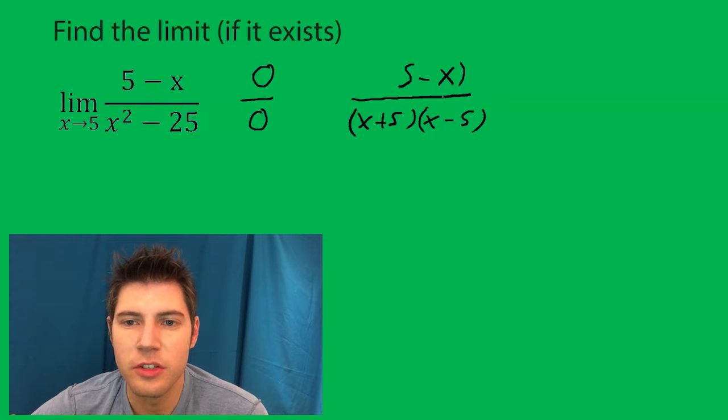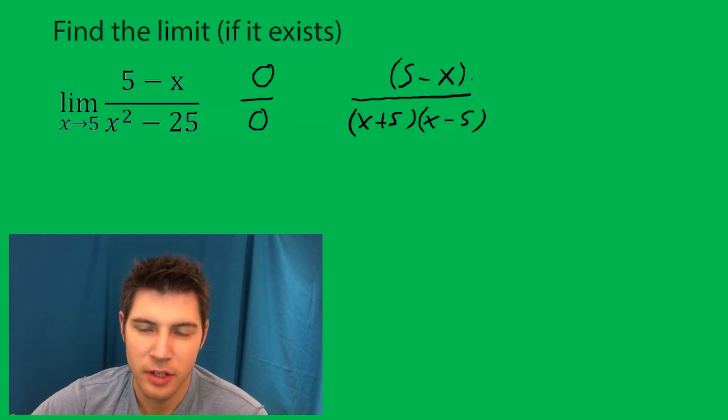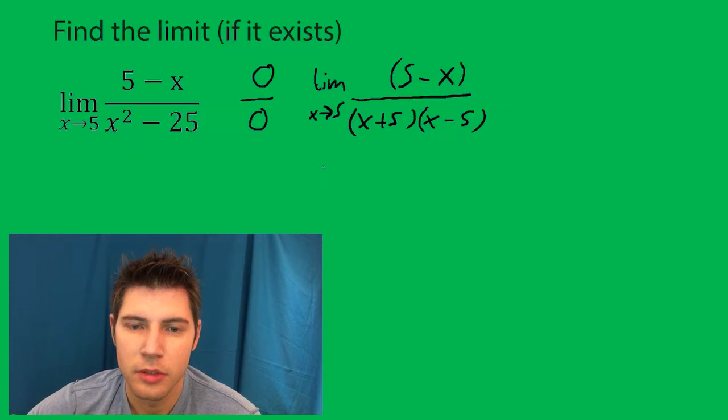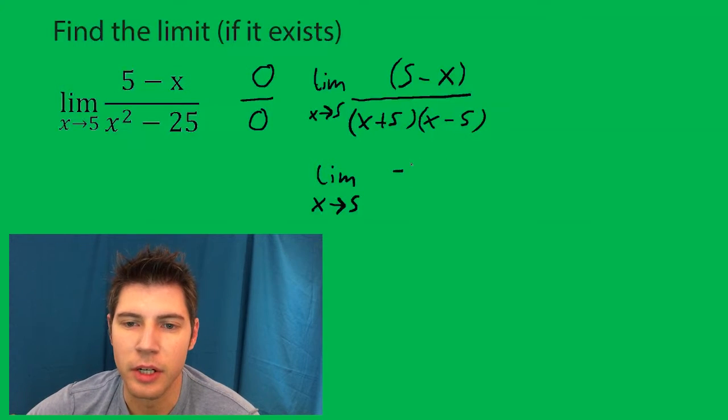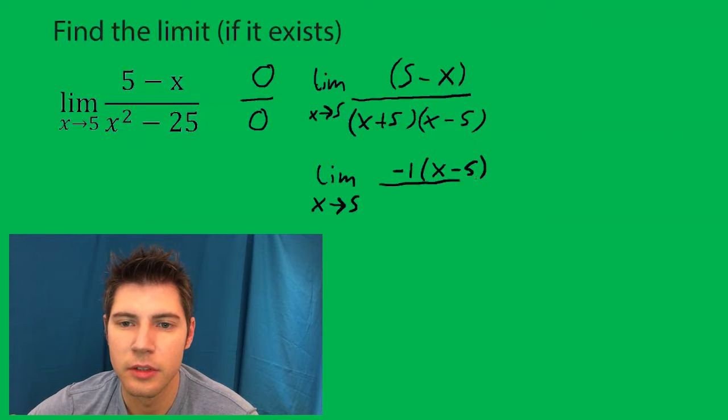Now while these two might look the same they're not. We need to factor negative 1 out of this. You should always keep the limit with it and then we're going to factor negative 1 out. Now when we factor negative 1 out this becomes x minus 5. Because if you distribute the negative it turns into this guy.